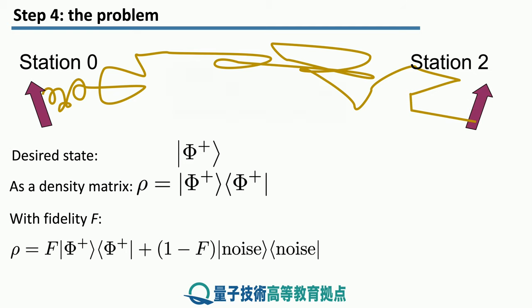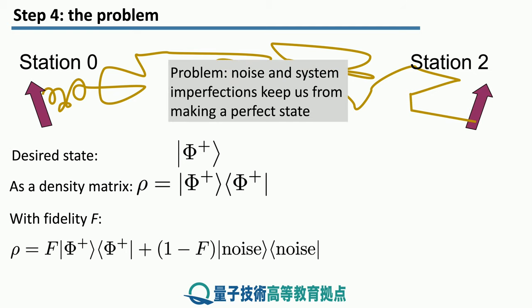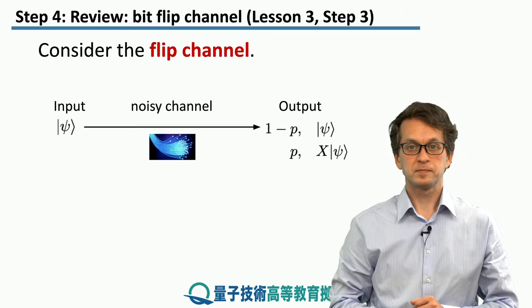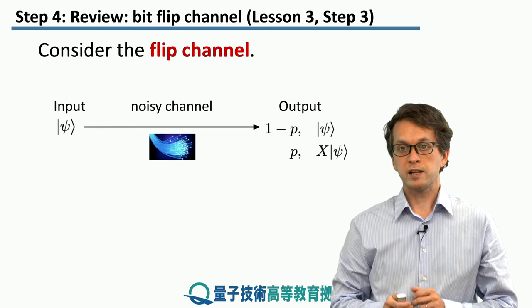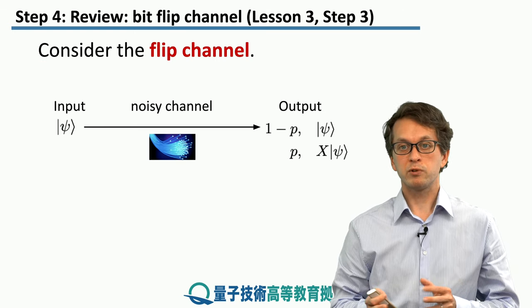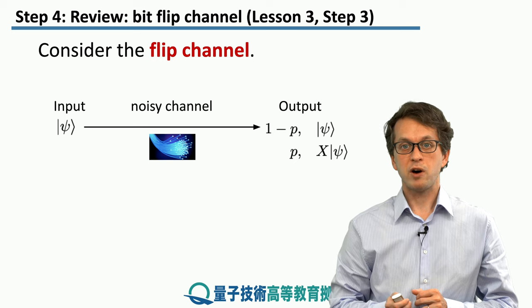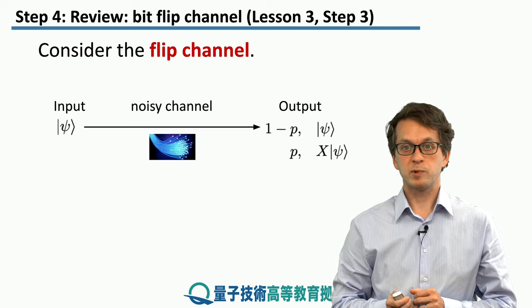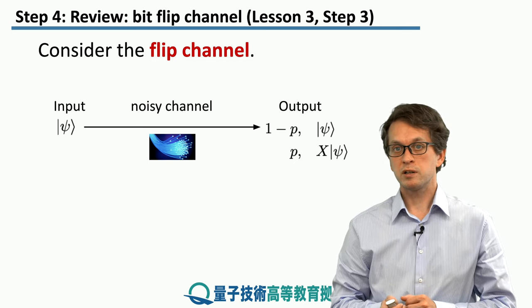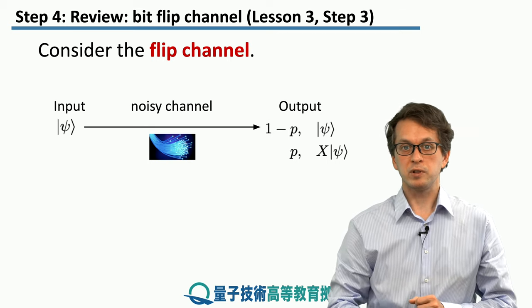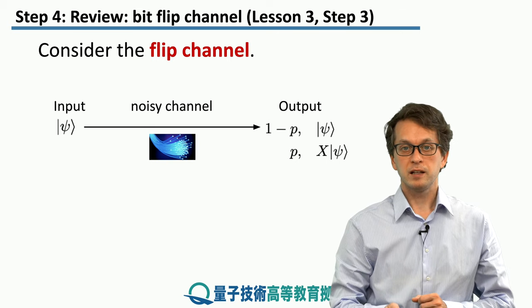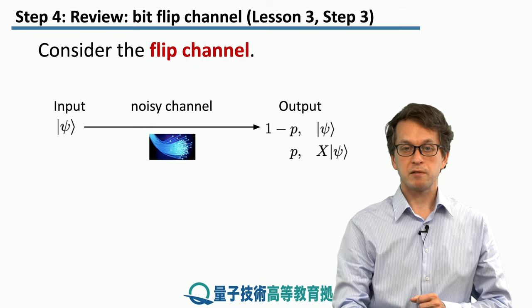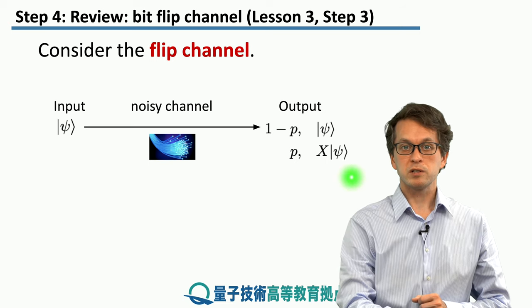We will represent the noisy bell state by slightly misaligned arrows. Rather than considering the full general case of how noise affects our maximally entangled state, we will consider just one example: the flip channel. This channel we have seen in lesson 3, step 3, and it goes as follows.